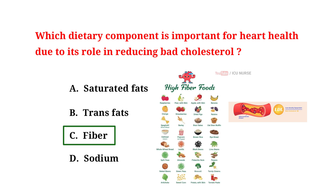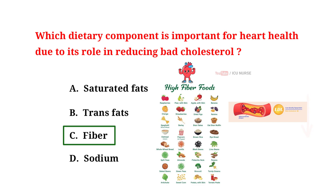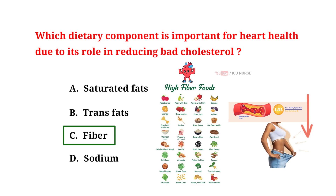Fiber is considered important for heart health because it helps reduce bad cholesterol levels — that is, LDL levels — in the blood. Soluble fiber in particular binds to cholesterol in the digestive system, preventing it from being absorbed into the bloodstream. This helps lower overall cholesterol levels, reducing the risk of heart disease. Additionally, fiber can help regulate blood sugar levels and promote a healthy weight, both of which are beneficial for heart health.